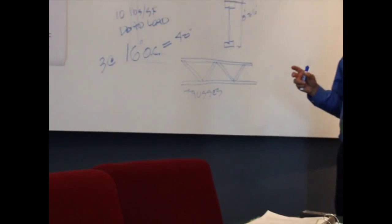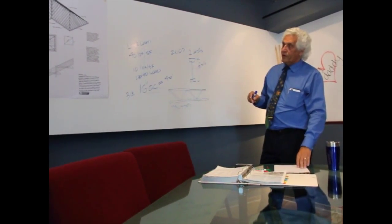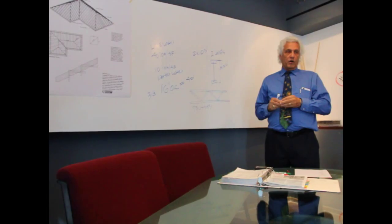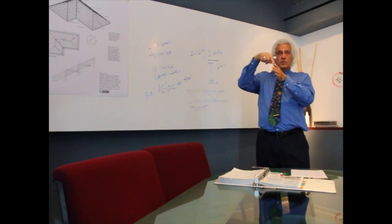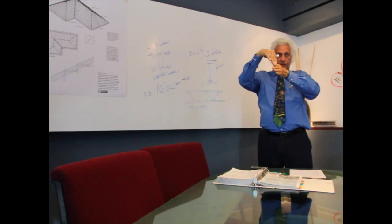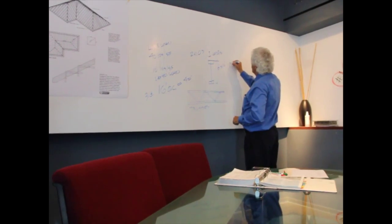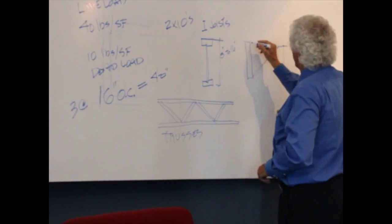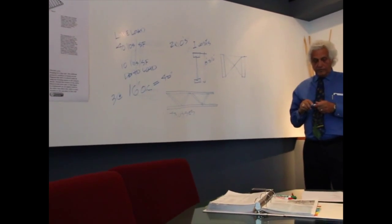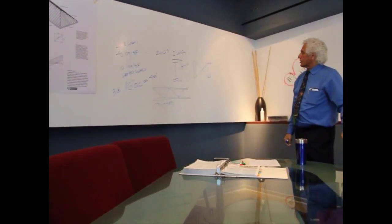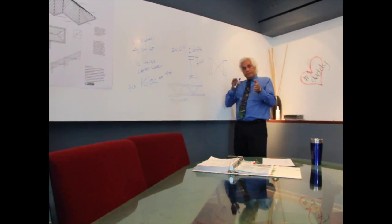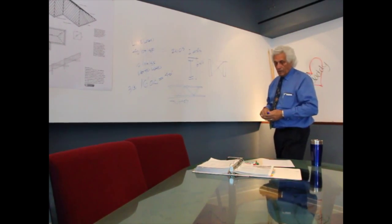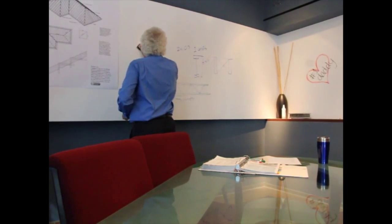These framing members have a tendency to rotate or rack — when a load is applied, they want to lay flat. To prevent this, we use what's called bridging or bracing. Cross bracing is provided at mid-span using one-by-three members, simply nailed between the joists, keeping the members from racking under high loads.